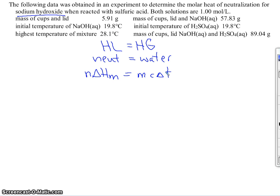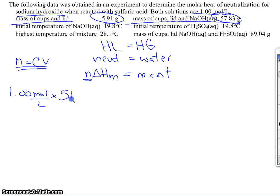It's asking for the molar heat of neutralization for sodium hydroxide. Recall, it's a solution, so n has to equal CV. Concentration is given in the question. It says both solutions are 1.0 mole per liter. So I'm going to start on the far left with the concentration, 1.00 mole per liter, and I have to multiply by the volume. Well, that's where it gets tricky, because to get the volume of sodium hydroxide, I have to deduce that from the mass. If you look at this experiment, we have the mass of the cups and lid at 5.91 grams. The mass of the cups, lid, and sodium hydroxide is 57.83. So if I go 57.83 minus 5.91, I'll get 51.92 grams. So I'm going to write that number down, 51.92.